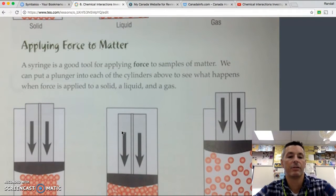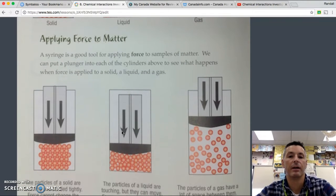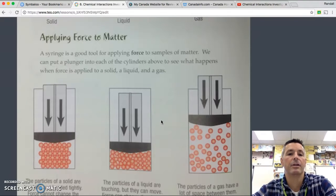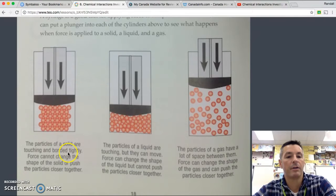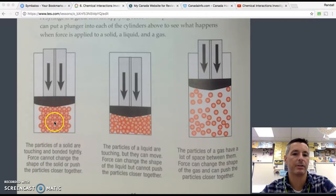Applying force to matter. It's a little smaller. A syringe is a good tool for applying force to samples of matter. We can put a plunger into each of the cylinders above to see what happens when force is applied to a solid, liquid, and a gas. The particles of a solid are touching and bonded tightly. Force cannot change the shape. Okay, so the particles in a solid, this would represent a solid, tightly bonded together. Force cannot change their shape.